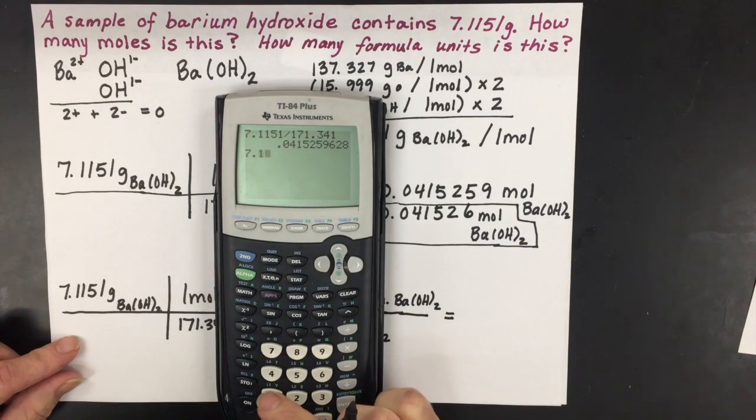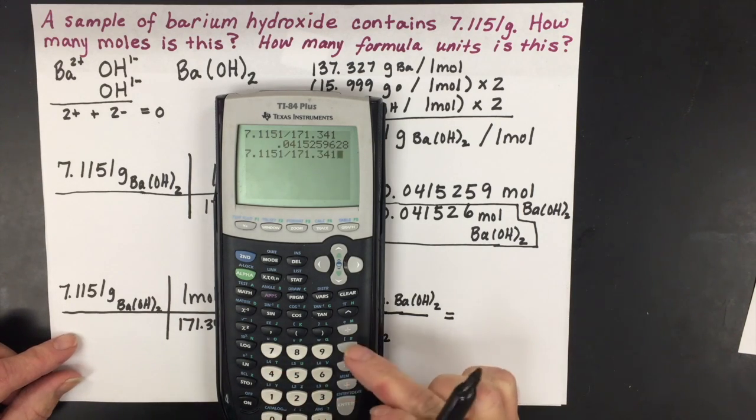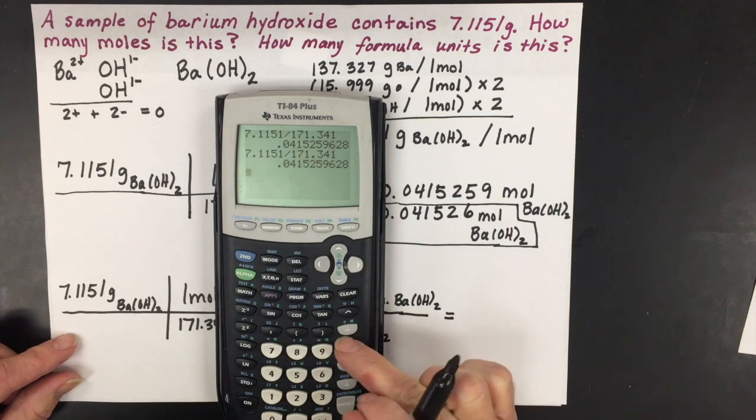You're going to have 7.1151 divided by the molar mass, which is the same as the first part of this problem. But then we're going to multiply that by Avogadro's number, which is 6.02.